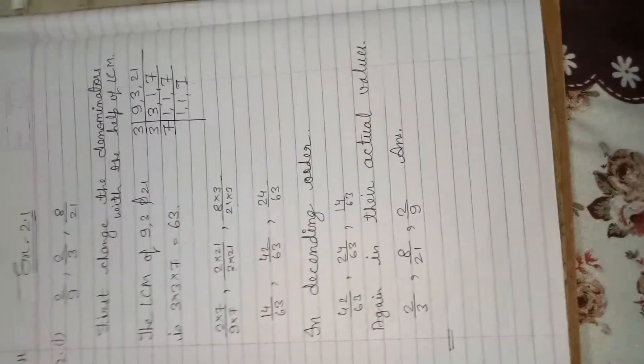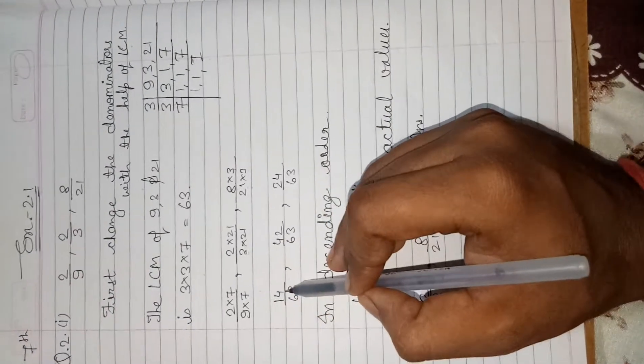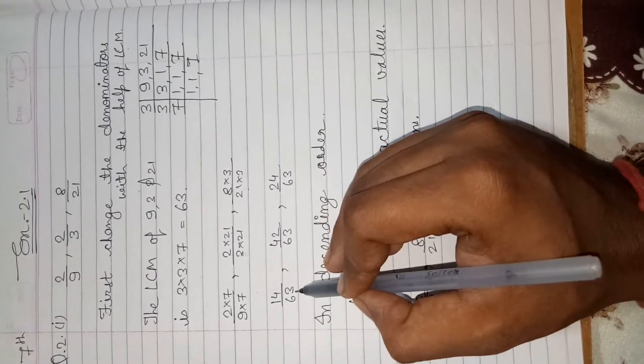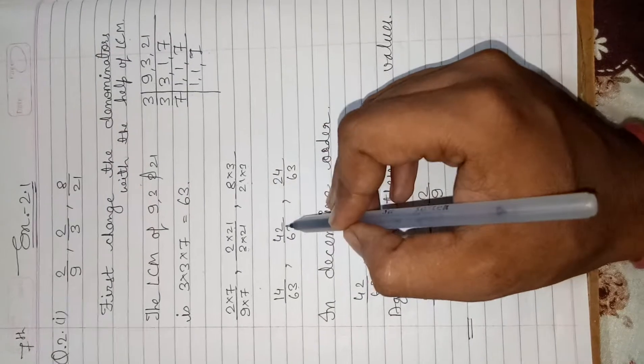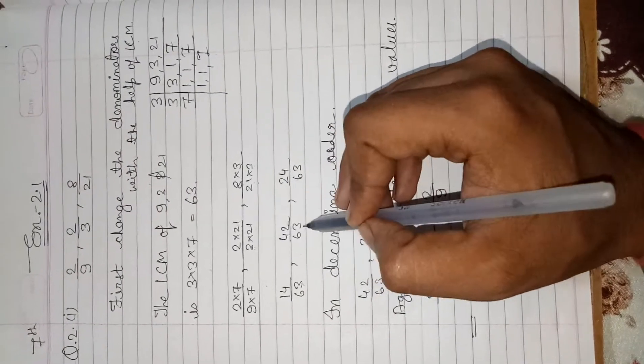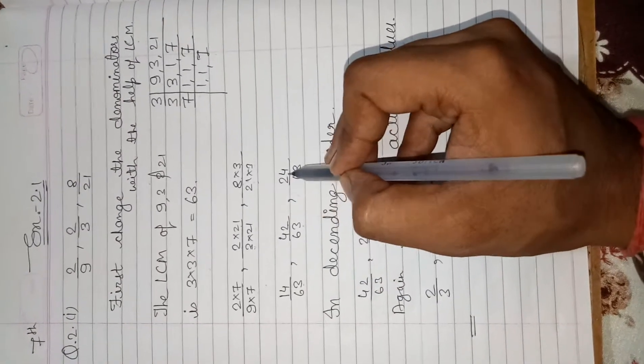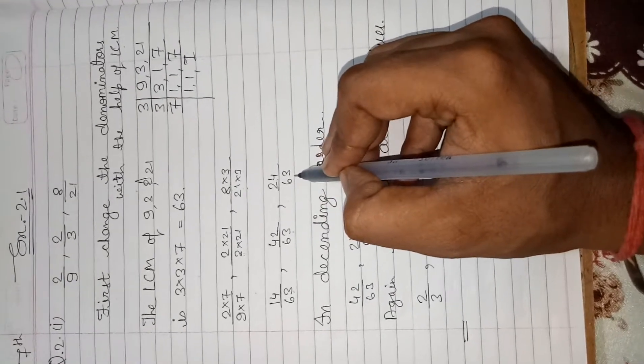In next line, you will see that 2 times 7 is 14, 9 times 7 is 63. 21 times 2 is 42, 21 times 3 is 63. 8 times 3 is 24, 21 times 3 is 63.